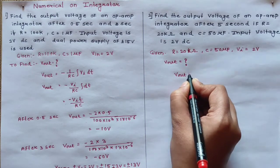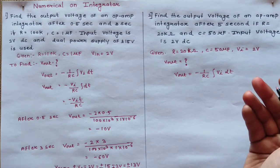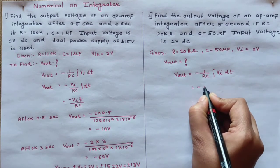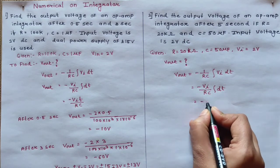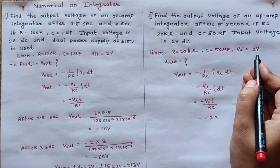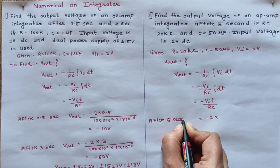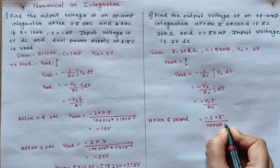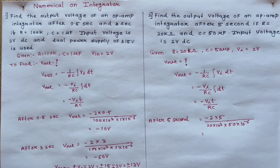What is the formula for the output voltage? Vout is equal to minus 1 upon RC, integration of Vi into dt. Since the input is a constant DC voltage, you can take the input voltage outside. So Vout equals minus Vi upon RC into t. Put the values: minus 2, after 5 second, so t is 5, upon R value 20 into 10 raise to the power 3, into C value 50 into 10 raise to the power minus 6. After solving this, you will get the output as minus 10 volt.